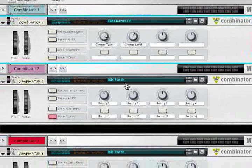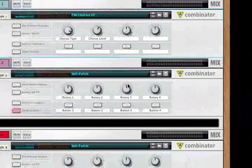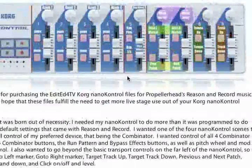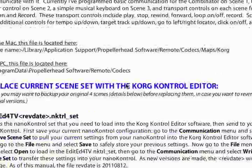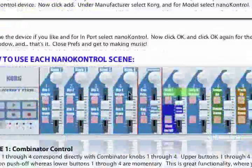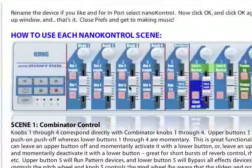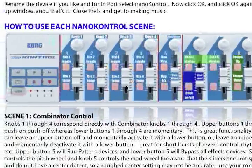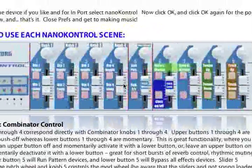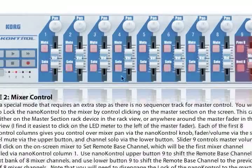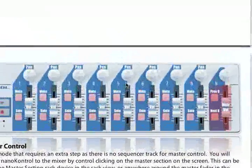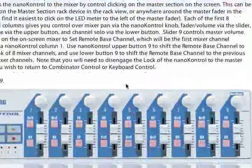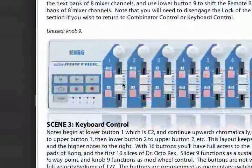Going back to the manual that comes with it — the manual shows you everything you need to know. It also includes graphics for what each of the scenes does. Scene 1 is Combinator Control — it shows you what all the buttons do. Here's Scene 2 for Mixer Control — it shows all the volumes, mutes, solos, pan, all that. And then Scene 3 is Keyboard Control, showing all the notes.